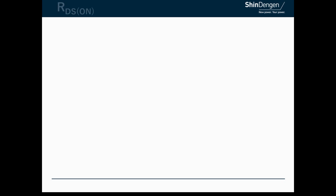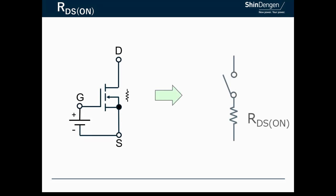This video explains RDS(ON), which is a typical performance characteristic of MOSFETs. When a voltage is applied between the gate and source of the MOSFET, the drain to source is conducted.